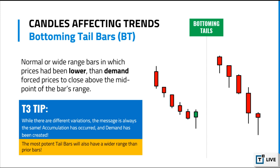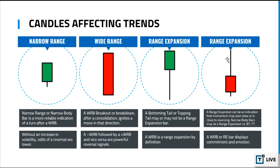Bottoming tails are the same but in reverse: normal or wide range bars in which prices had been lower, then demand forced prices to close above the midpoint of the bar's range. The message is always the same — accumulation has occurred and demand has been created, because the shorts are now trapped and going to look to cover. The most potent bottoming tail bars will also have wider range than normal — those are called range expansion bars. If a bottoming or topping tail bar has above-average range, at least one and a half times the size of the average bar, it's called a range expansion bar — and that is the single strongest reversal sign you can get.